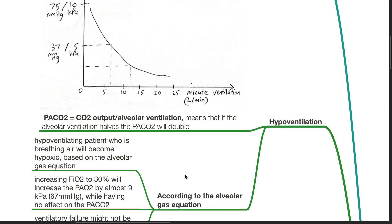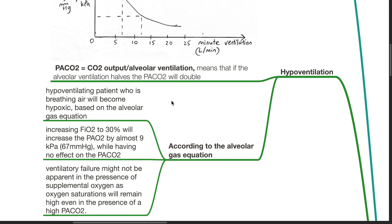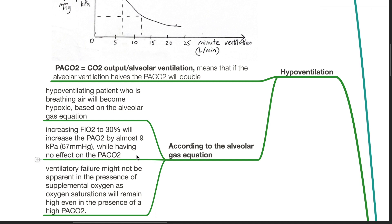Hypoventilation: the alveolar partial pressure of CO2 equals CO2 output divided by alveolar ventilation, meaning that if alveolar ventilation halves, PaCO2 will double. According to the alveolar gas equation, a hypoventilating patient breathing air will become hypoxic, and increasing FiO2 to 30% will increase PAO2 by almost 67 mmHg while having no effect on alveolar PaCO2. Ventilatory failure might not be apparent in the presence of supplemental oxygen, as oxygen saturations will remain high even in the presence of a high PaCO2.